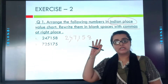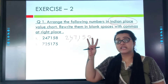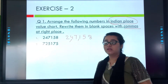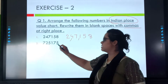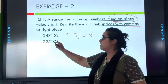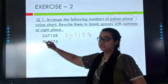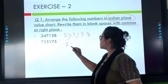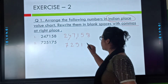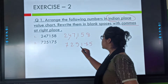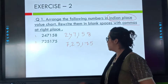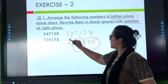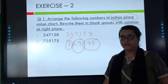Remember the three families? Ones, thousands, and lakh. I know you remember — very good. Now the second one: ones, tens, hundreds, thousands, ten thousands, lakh. Again there are six numbers. I will copy the question and then insert the commas. This is the ones family, this is the thousands family, and this is the lakh family.